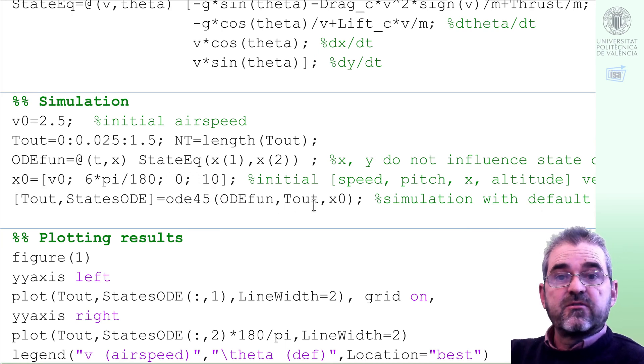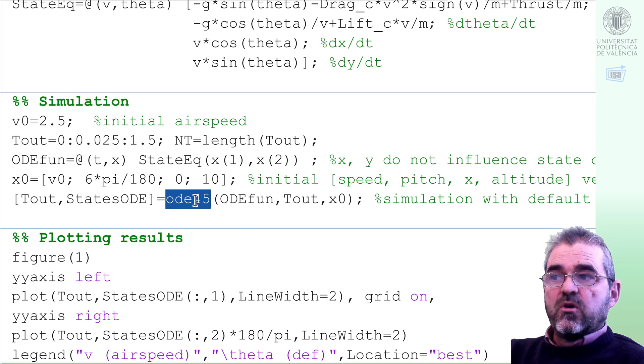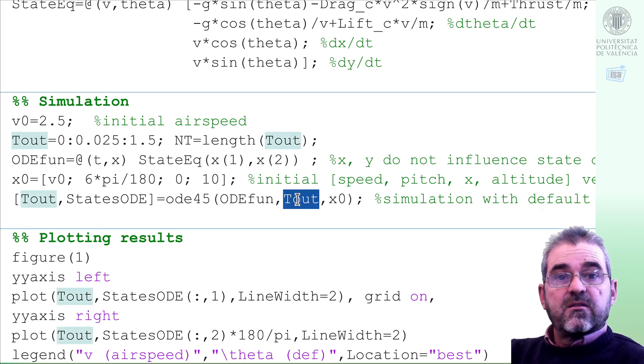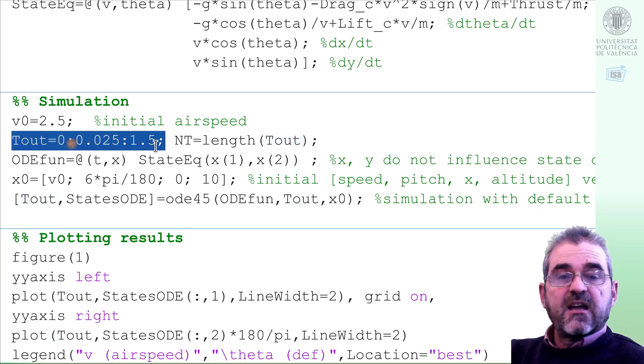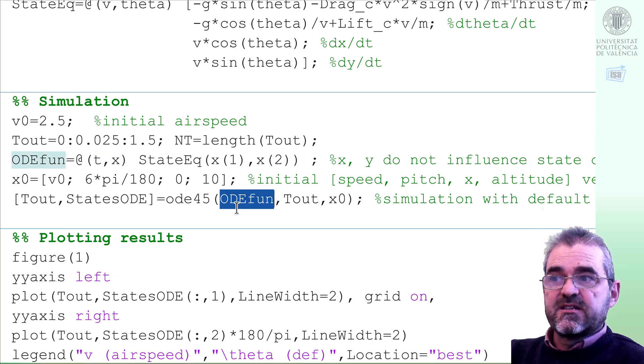And once I have that initial condition vector, that will be the last argument to ODE45, which is the numerical integration code we will use from MATLAB. As we are not putting any tolerance-related argument, we will use default tolerances. ODE45 needs also the time I wish to simulate the system. The output will be this vector of time instances, so I will simulate from 0 to 1.5 seconds and I wish a simulation frame for a later animation every 25 milliseconds.